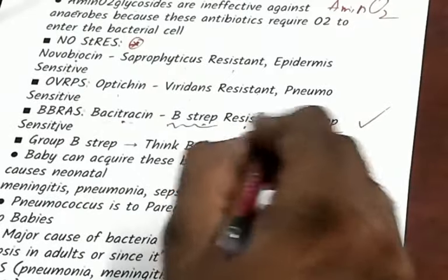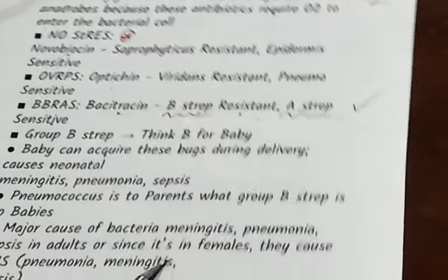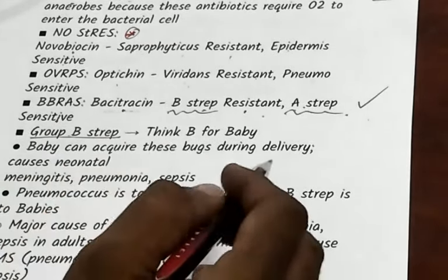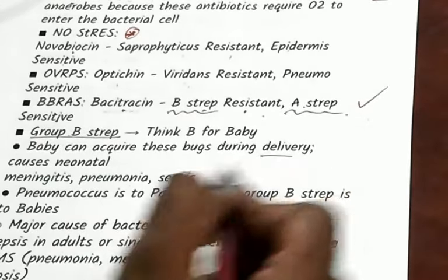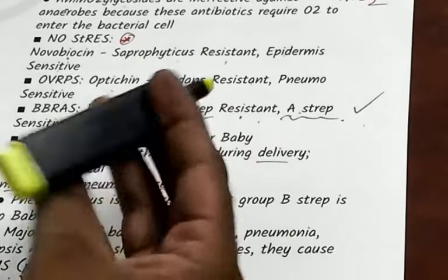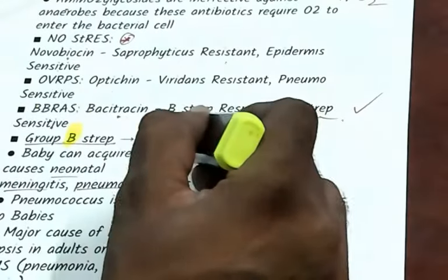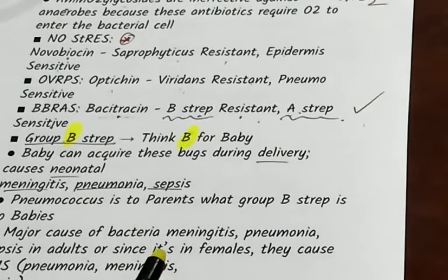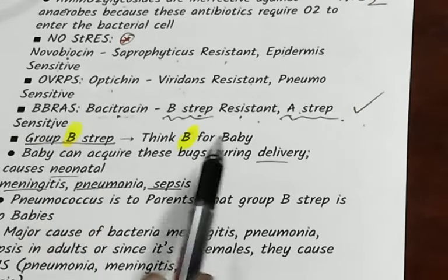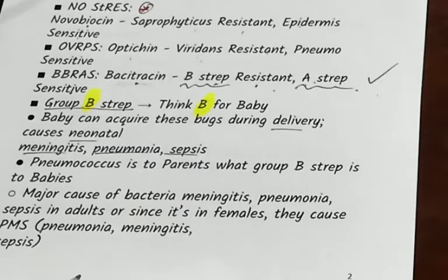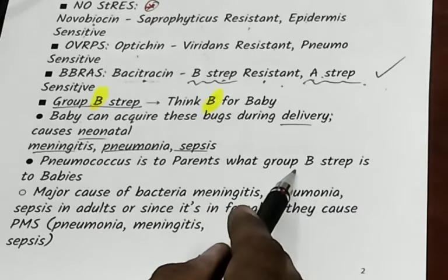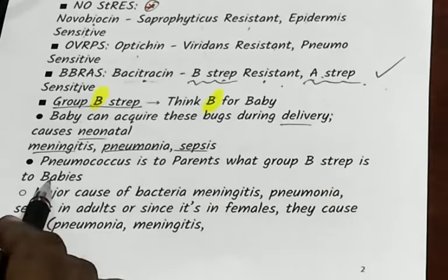Group B streptococcus is typically part of the maternal vaginal flora; it is acquired during delivery and leads to neonatal meningitis, pneumonia, and sepsis. How will you remember? Group B — B is for baby, for the little baby. Pneumococcus is P for parents, and Group B streptococcus is for babies.